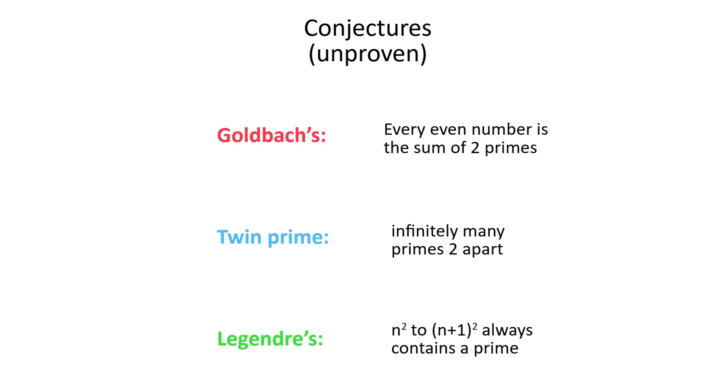It's conjectured that every even number is the sum of two primes, also that there are infinitely many primes spaced two apart, and that consecutive perfect squares always contain a prime in between them. All three of these remain unproven, but their equivalents with the prime-like practical numbers are proven.